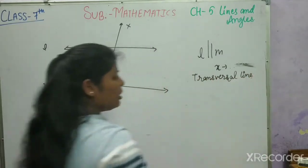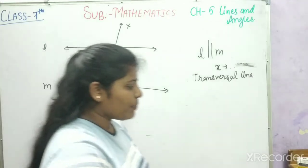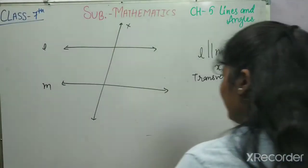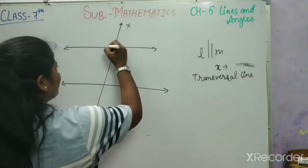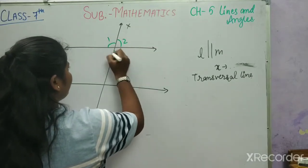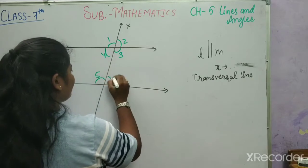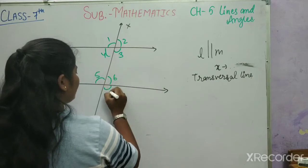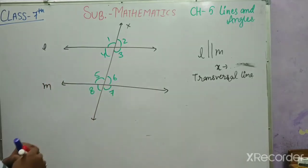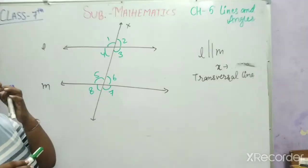So what is the relation of their angles? I will tell you what the relation of their angles is. The angles are labeled: this is angle 1, this is 2, this is 3, this is 4, 5, 6, 7, 8. Now we will see which angle has what relation and what name.